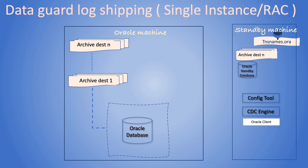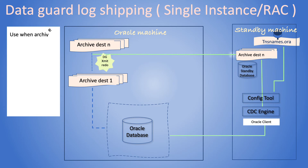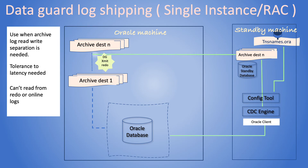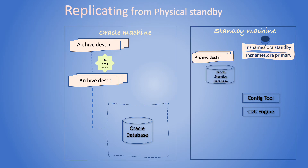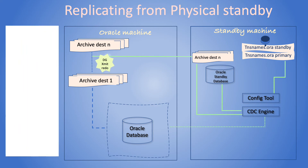In this mode, logs are shipped to another machine via Oracle Data Guard. CDC is installed in the Oracle standby machine where Data Guard ships the logs to. In this scheme, CDC is configured against the physical standby database. CDC still keeps connections to the primary database for a few basic queries, and is installed and configured on the standby database machine.